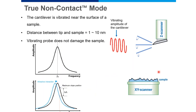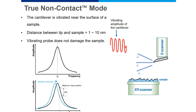In non-contact mode, we vibrate or oscillate the cantilever at very high frequencies — at its resonant frequency. We then slowly bring the vibrating tip close to the sample. The red sinusoidal wave represents the vibrating cantilever in air at its resonant frequency. As the cantilever comes closer to the sample, it starts to interact with the sample via long-range attractive forces.